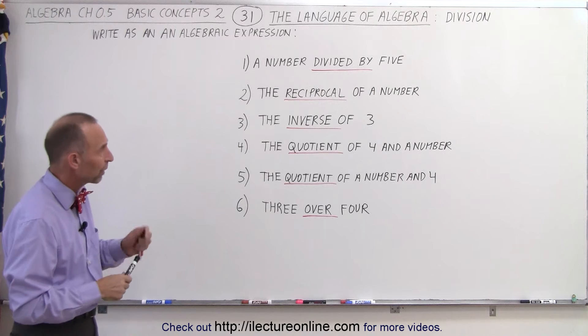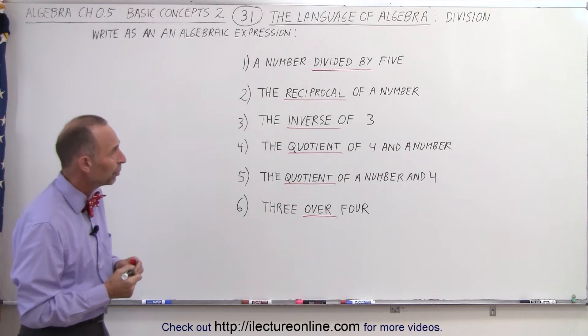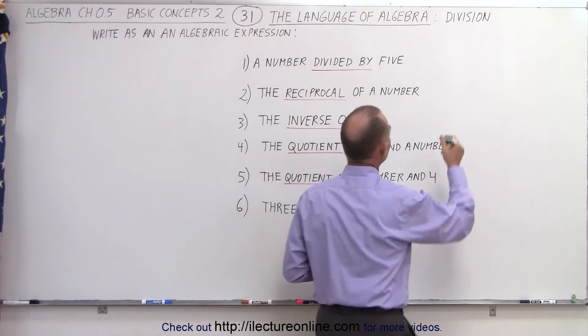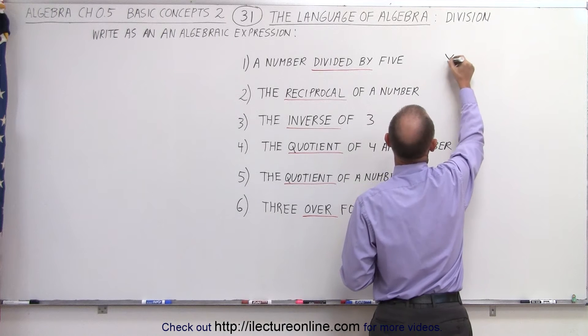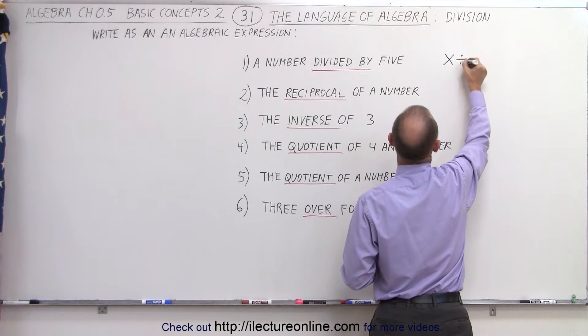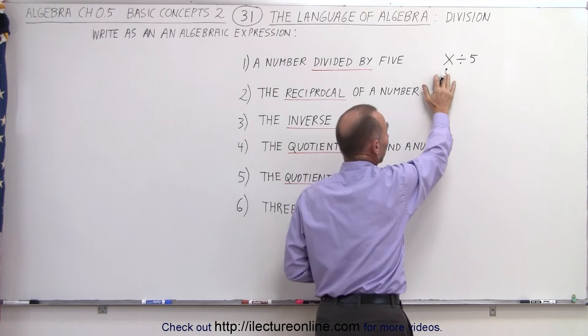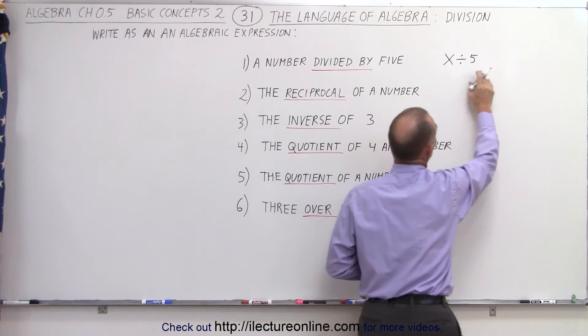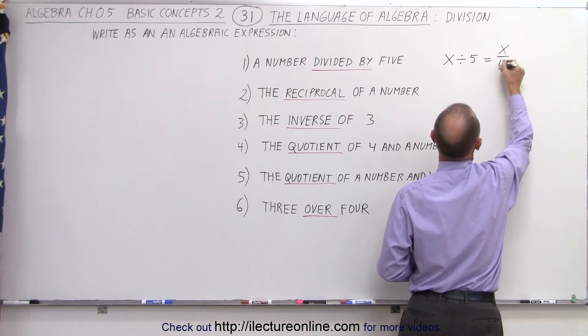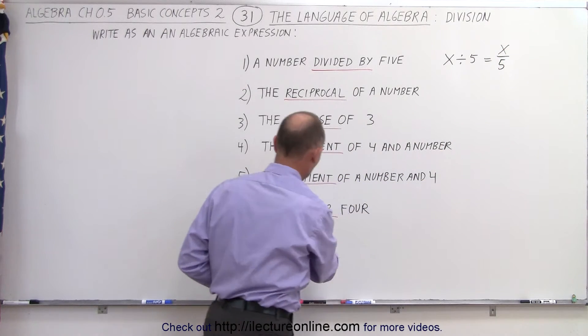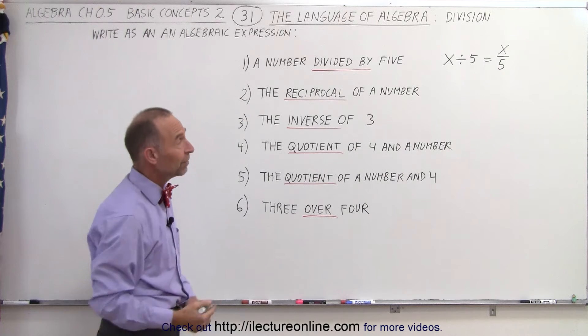So let's now write the algebraic expression. A number divided by 5. We take a number, we're going to let that be represented by x, and then we divide it by 5. This means a number, an unknown number x, divided by 5, or we can write this as x over 5. And when we see the word over, that's what that means.